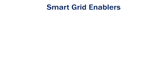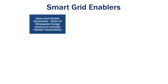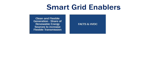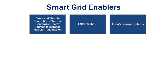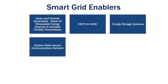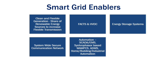To enable the smart grid, we need clean and flexible generation, FACTS devices and HVDC-based systems, energy storage systems, system-wide secure communication networks, and automation using SCADA and automated energy management systems. The system should be synchrophasor-based — WAM, PMU, ADMS — and homes, buildings, and industries should be automated.